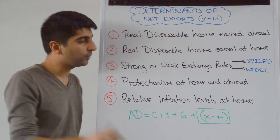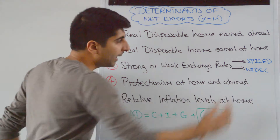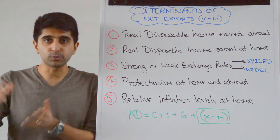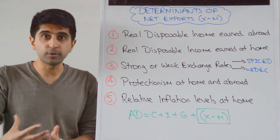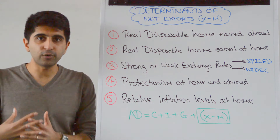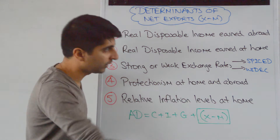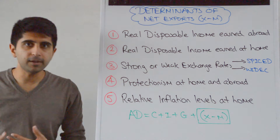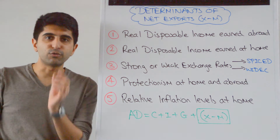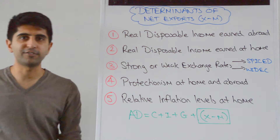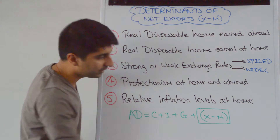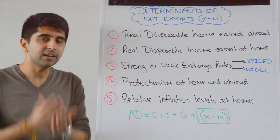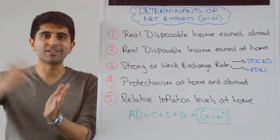With a weak exchange rate, the opposite will happen. Imports become more expensive, therefore demand for imports will fall and the expenditure on imports is going to fall as well. So the value of M is going to go down. Exports become cheaper, so demand for exports increases, and the revenues generated from exports will increase, increasing the value of X. Therefore the value of this bracket will be higher, shifting AD to the right.